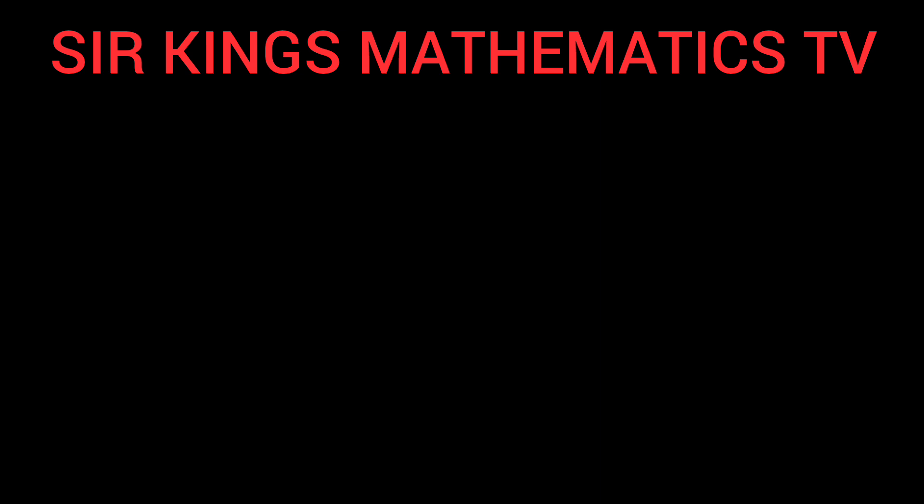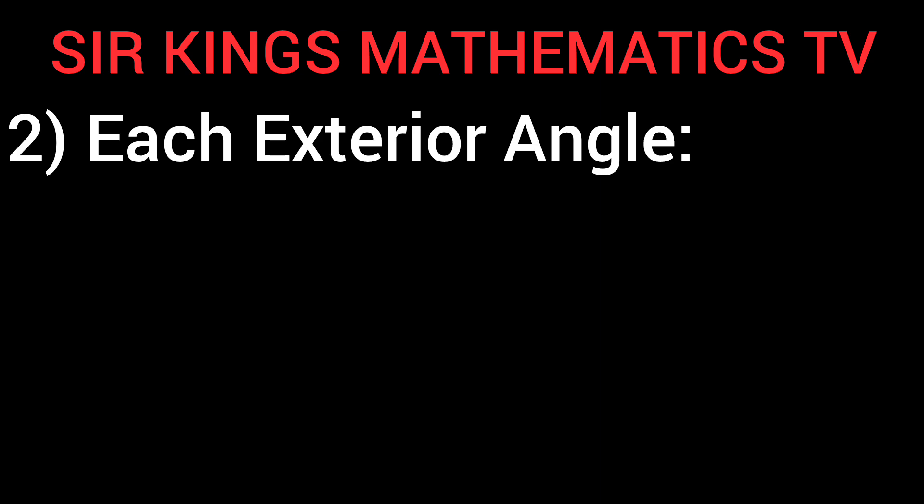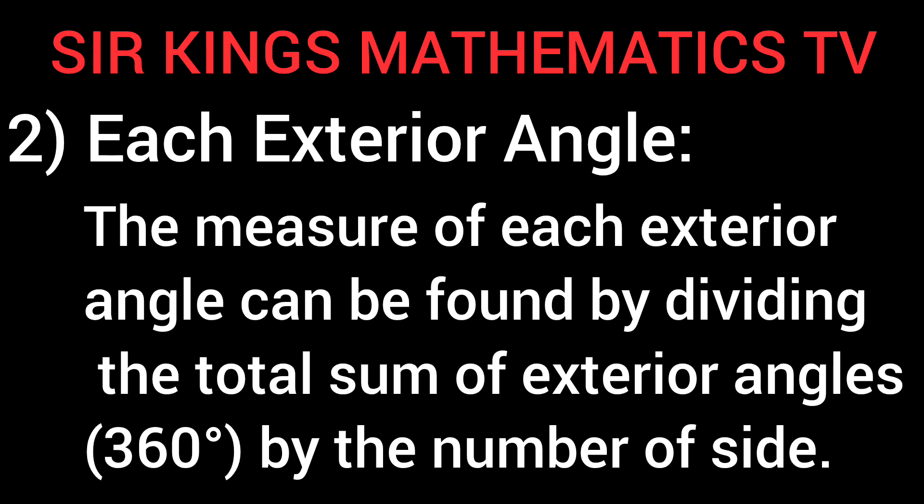Each exterior angle: The measure of each exterior angle can be found by dividing the total sum of exterior angles (360 degrees) by the number of sides.